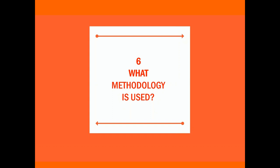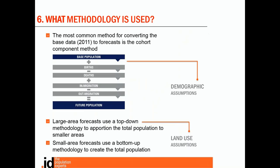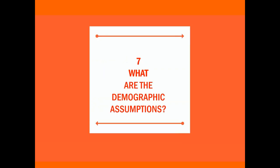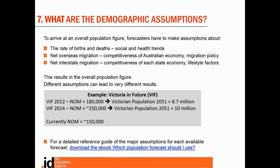A discussion of methodology can't be avoided, but I'll try and keep it to the essentials. Forecasters take the population in the base year and apply assumptions to work out the future population. There are two main kinds of assumptions: demographic assumptions and land use assumptions. Most forecasts, regardless of their level of detail, use the cohort component method for the demographic assumptions. The level of detail in the land use assumptions varies substantially between large area and small area forecasts. Forecasters make assumptions about births, deaths and migration to come up with the total population figure that they then need to distribute. Different assumptions can lead to very different results.